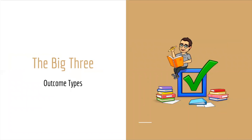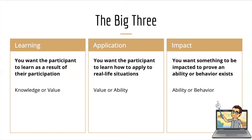Next I'll talk about the big three, which are outcome types. The first is learning — you want the participant to learn as a result of their participation, aligning with knowledge or value in the KVAB model. The second is application — you want the participant to learn how to apply in real-life situations, aligning with value or ability. The third is impact — you want something to be impacted to prove an ability or behavior exists. This helps you whittle down from the competency area through KVAB to the big three, in order to finalize and write the specific learning outcome.